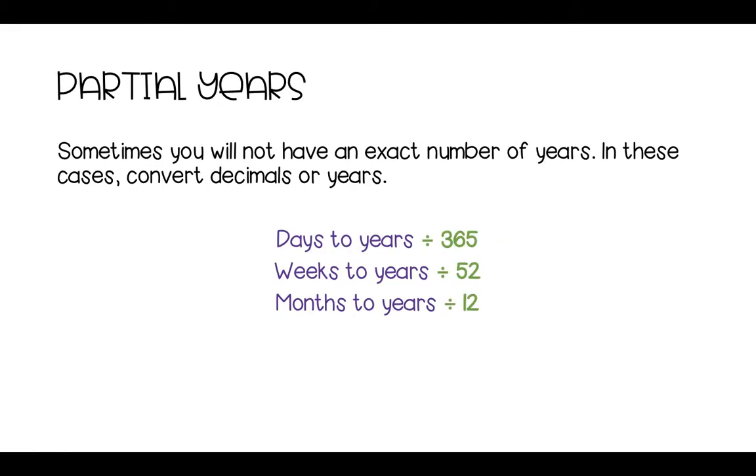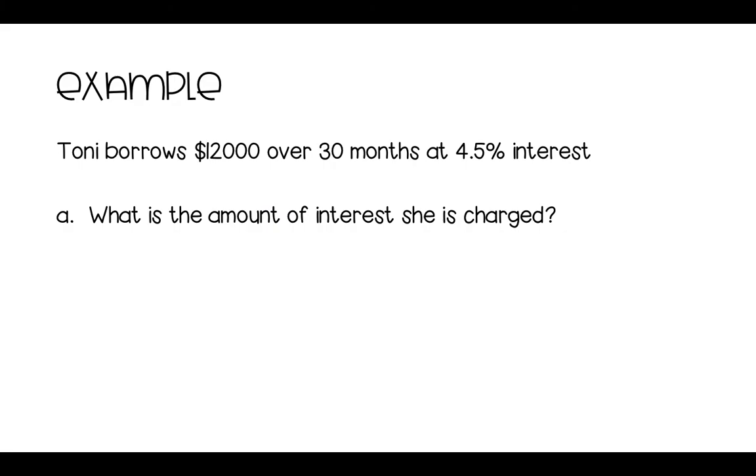You could also look at quarterly, which means for three months of the year, or biannually, which means you're getting it twice a year. So it might be every six months, if that's what it's saying, so you can convert it to yearly.